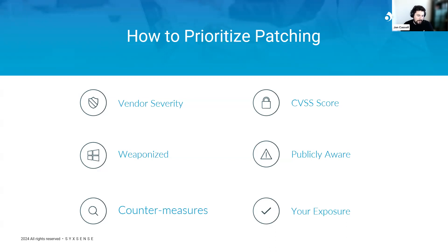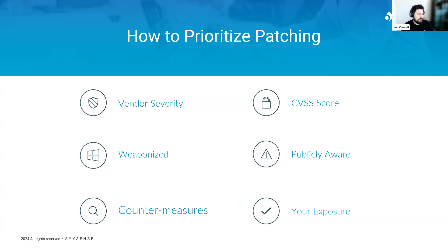Before delving into the latest updates, let's discuss how we prioritize them. At Sixth Sense, we focus on six key factors. First, we consider the vendor's severity, which ranges from critical to non-applicable or optional, and is provided directly by the update manufacturer. While it's crucial to check their advisory, this rating can clearly be biased. Many third-party updates don't receive severity ratings from manufacturers — probably to avoid highlighting their product negatively. We're also looking at accountability and disclosure, and some shifts from the U.S. administration pushing more towards accountability from manufacturers, which may change in the future.